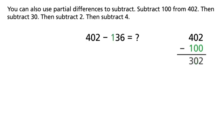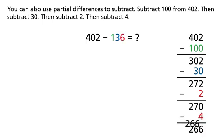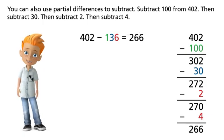Then subtract 30, then subtract 2, then subtract 4. There are 266 cell phone towers in Jurloe County.